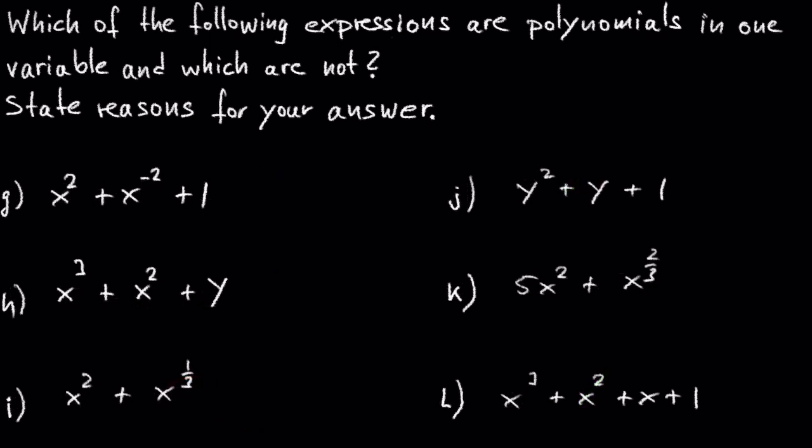In G we have x squared plus x to the negative 2 plus 1. Negative numbers as an exponent are not allowed in polynomials. So this is not a polynomial.